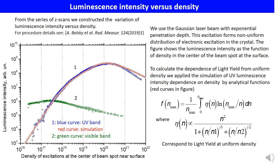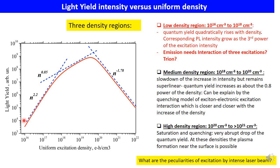To calculate the dependence of the light yield on uniform density, we apply a simulation of the UV luminescence intensity dependence on density by an analytical function, shown by the red curves on the figure. This integral function f(N_max) of the light yield η(N) is used to fit the experimental data, and the derivative of f(N_max) gives the light yield, which is taken as a rational form where n1, n2, γ1, and γ2 are adjusted parameters. The result gives the light yield dependence versus the uniform excitation density, shown in log-log scale by the red curves.